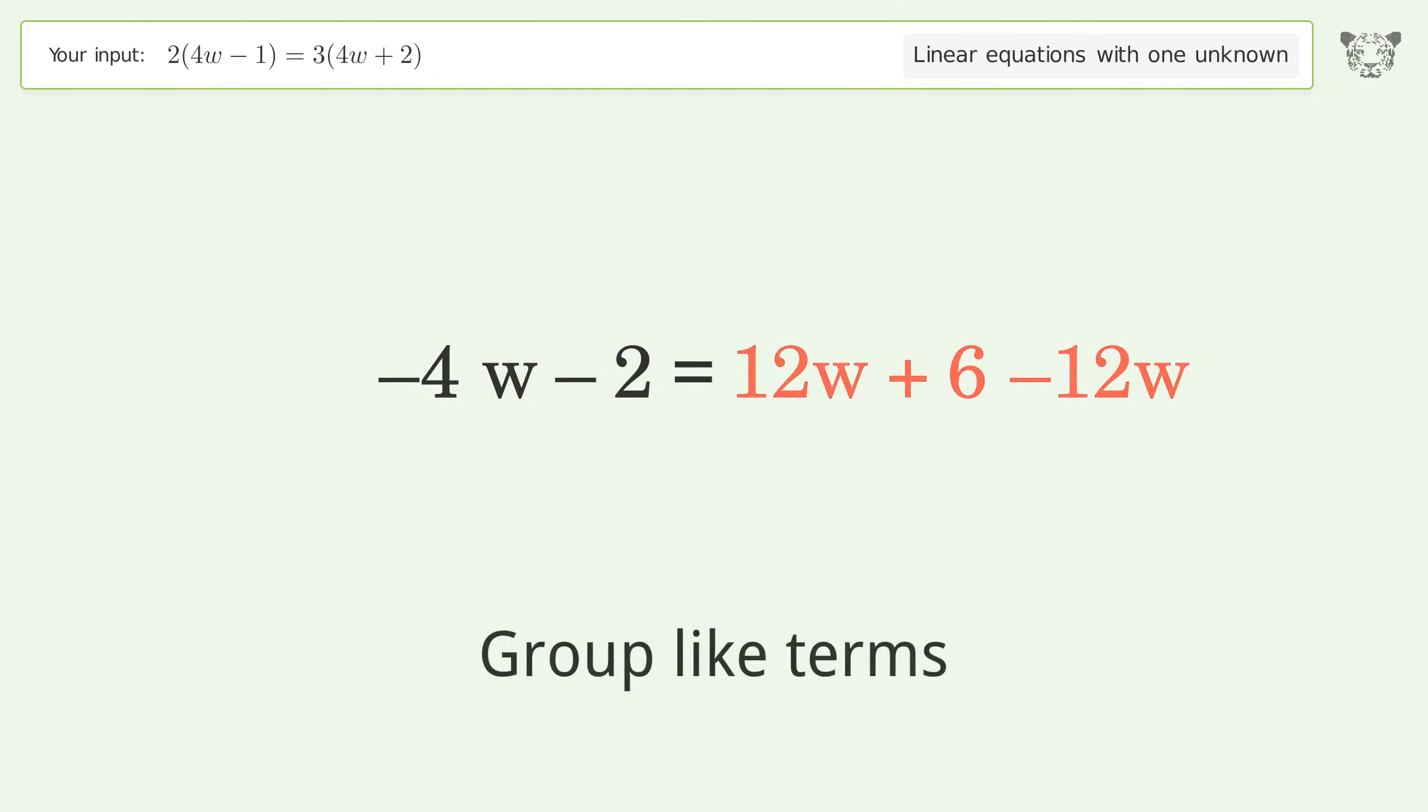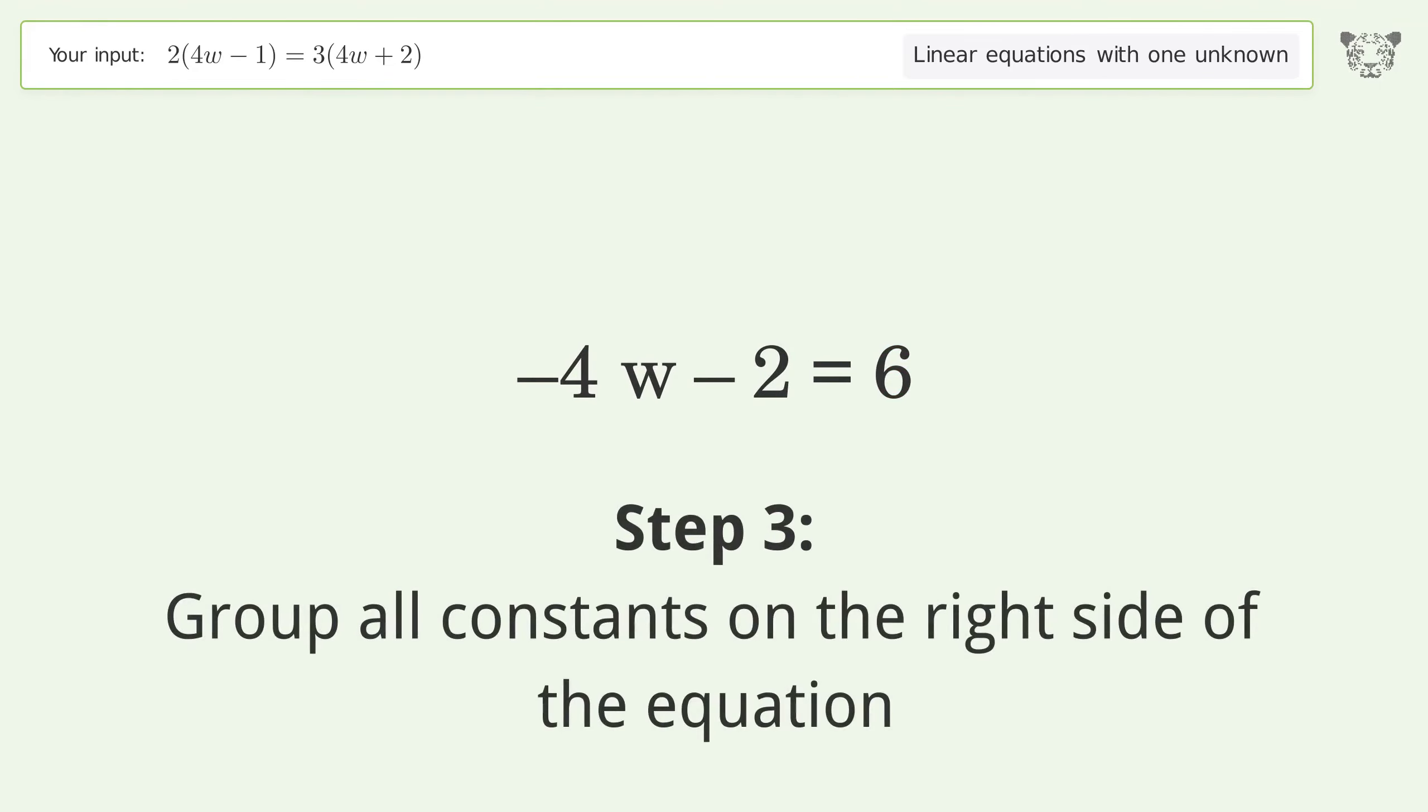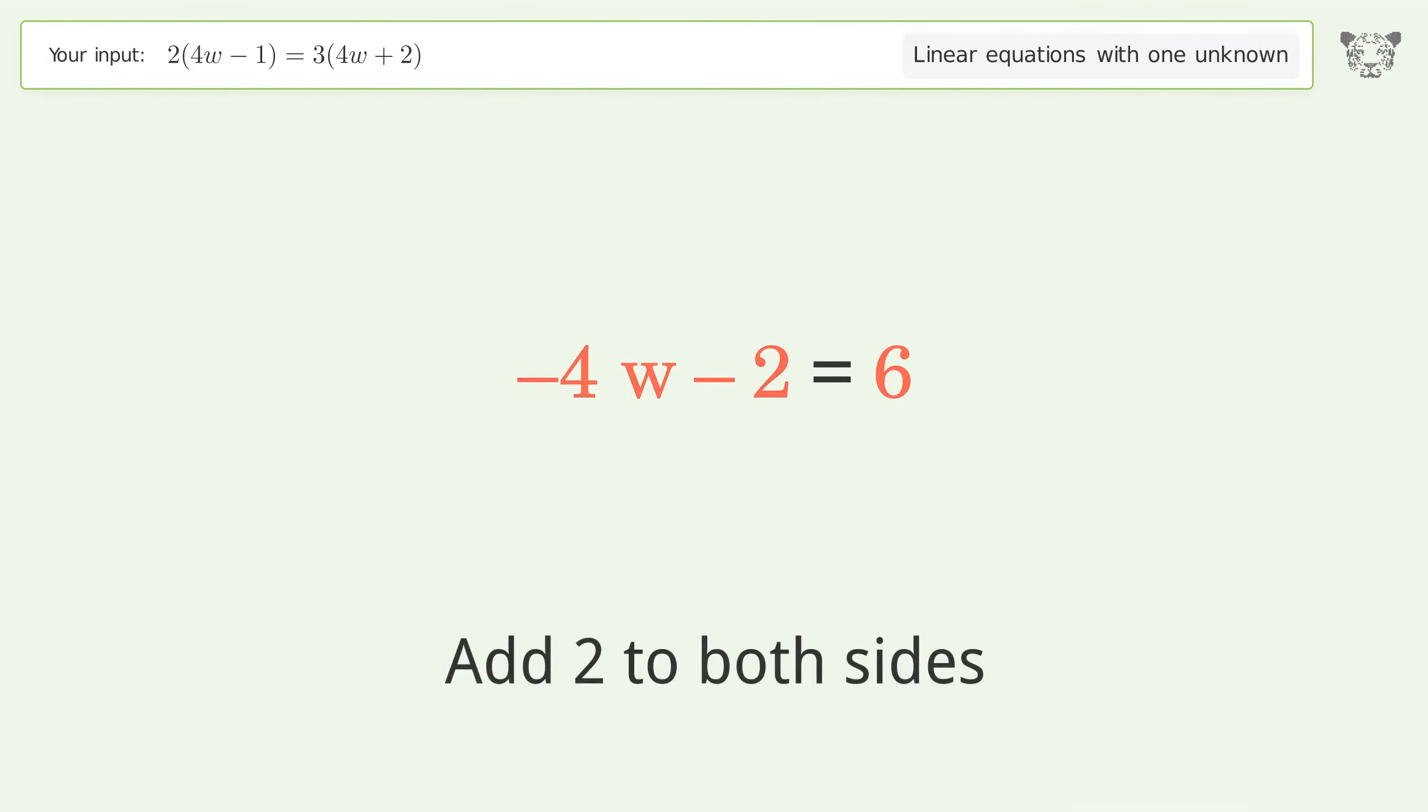Group like terms. Simplify the arithmetic. Group all constants on the right side of the equation. Add 2 to both sides. Simplify the arithmetic.